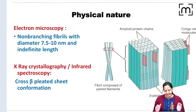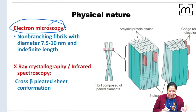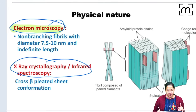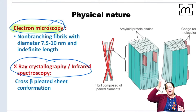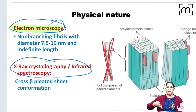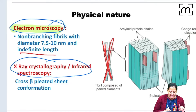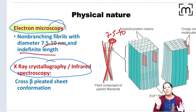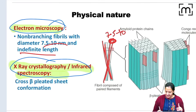Regarding the physical nature of amyloid, you need to learn two things: the structure on electron microscopy, and the structure on X-ray crystallography and infrared spectrometry. On electron microscopy, amyloid forms non-branching elongated fibrils of indefinite length, with a maximum diameter of 7.5 to 10 nanometers.